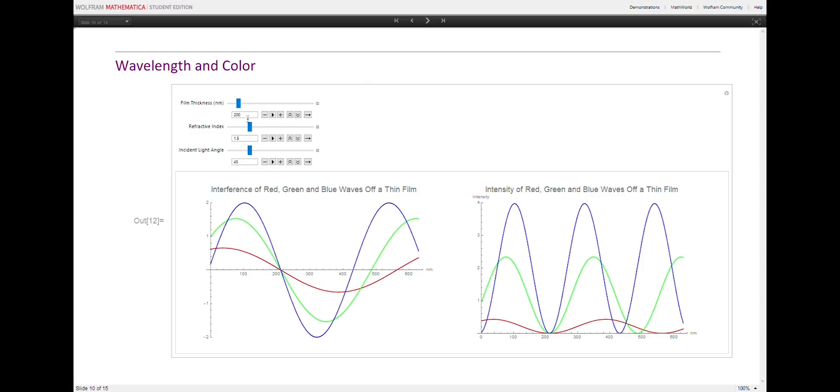For example, for a film thickness of 200 nanometers with refractive index 1.5 and incident light angle 45 degrees, we can see that there's more blue in this color than green or red.